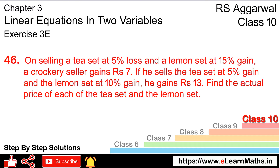Let's do question number 46 of Exercise 3E, that is linear equations in 2 variables. Question 46: On selling a tea set at 5% loss and a lemon set at 15% gain, a crockery seller gains rupees 7. If he sells the tea set at 5% gain and the lemon set at 10% gain, he has a profit of 13 rupees. Find the actual price of each of the tea set and the lemon set.